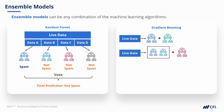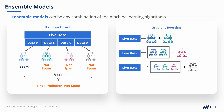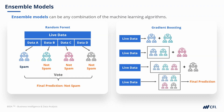Each model that we add gradually improves the predictions until finally we reach a final prediction. Empirically, ensemble models tend to add about 5% improved performance over standalone machine learning models.